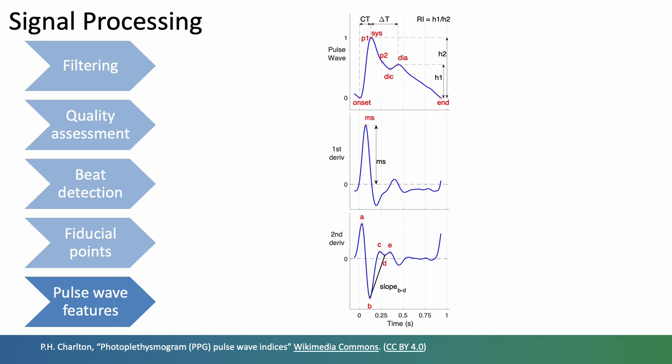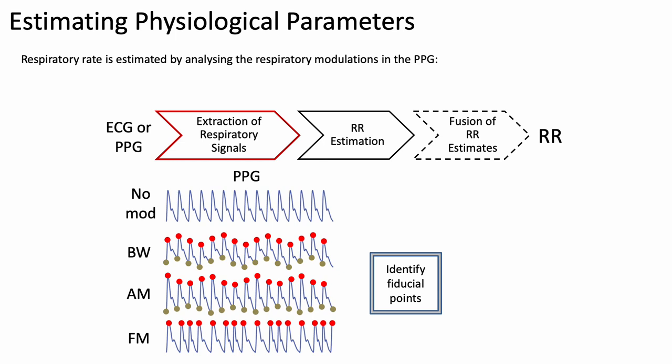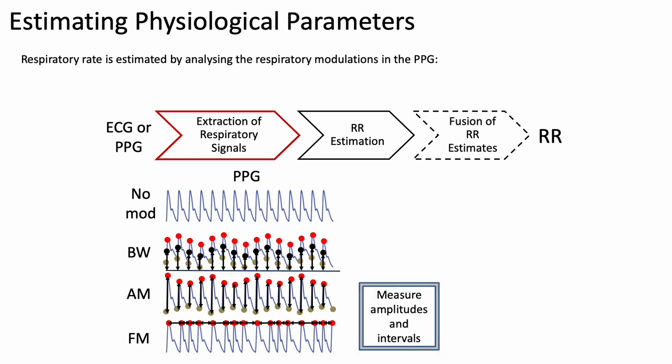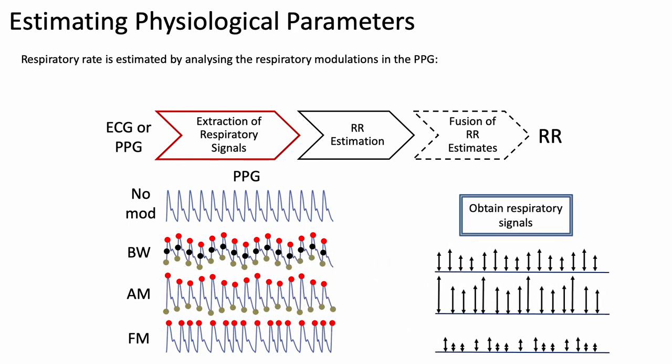I'll give you a few examples of how this process is used to estimate physiological parameters. Firstly, estimating respiratory rate. Respiratory rate algorithms typically consist of three steps. Firstly, the extraction of respiratory signals which is done by identifying fiducial points on the pulse wave and finding the baseline, finding the amplitudes and beat to beat intervals and using these as surrogate respiratory signals where ideally the signals exhibit one peak per breath.